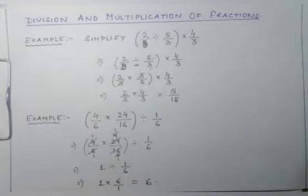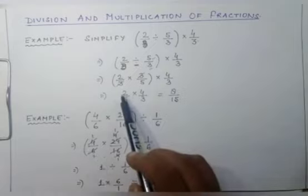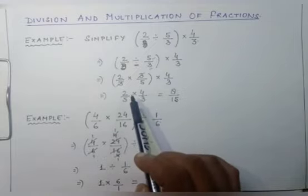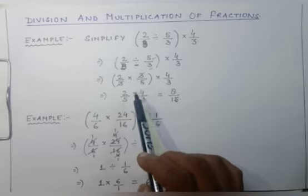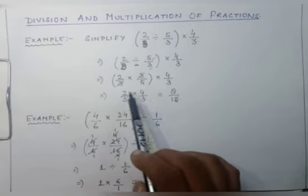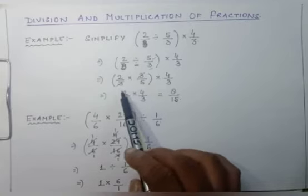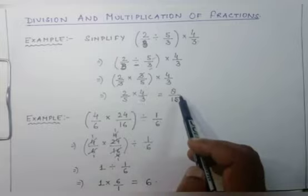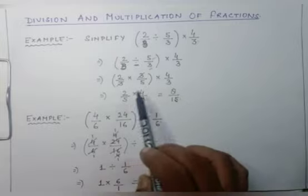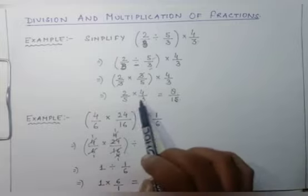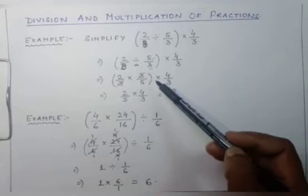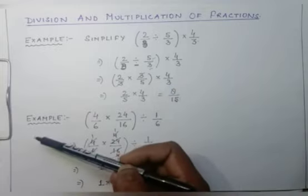Now 2/5 multiplied by 4/3. If it can be simplified, simplify it; if not, just multiply numerator by numerator and denominator by denominator. So 2 × 4 = 8, and 5 × 3 = 15. The answer is 8/15. I hope that is clear to everyone. Let us come to another example.